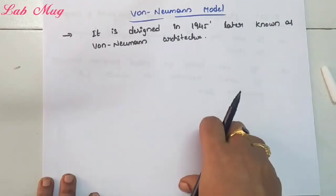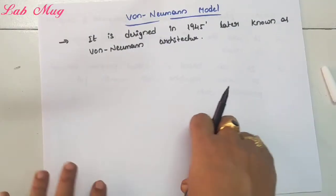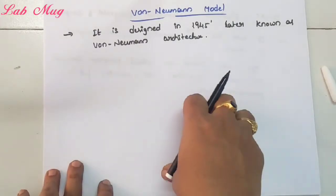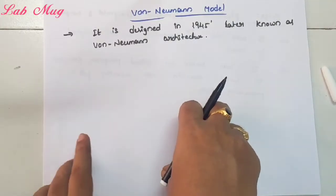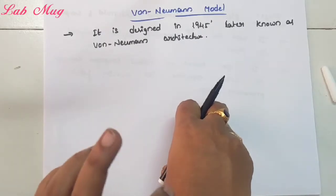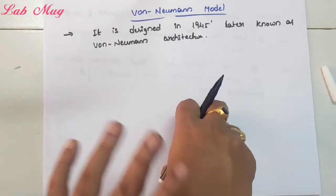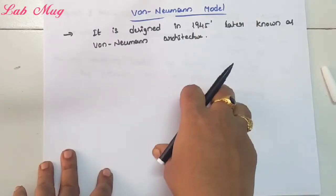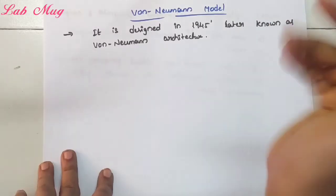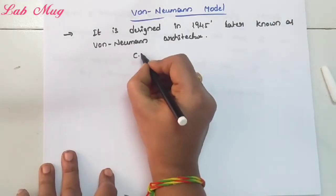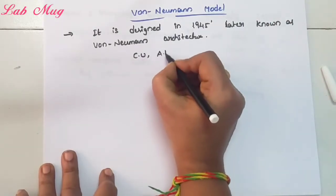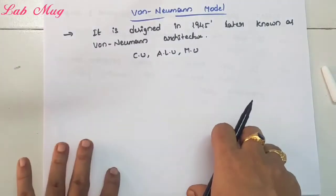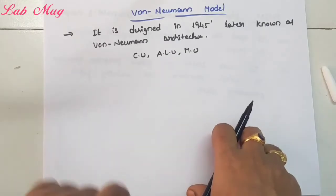In the Von Neumann architecture, we divide it into three partitions. Those three parts which we already saw previously — we studied two concepts: basic operational concepts and functional units of a digital system. From that, we understand the basic computer. In the Von Neumann model, the three parts are: control unit, arithmetic and logical unit, and memory unit.